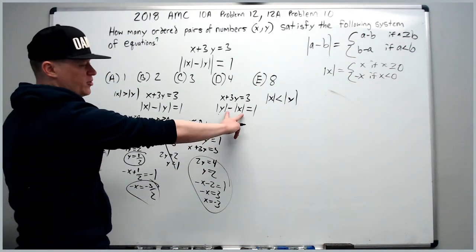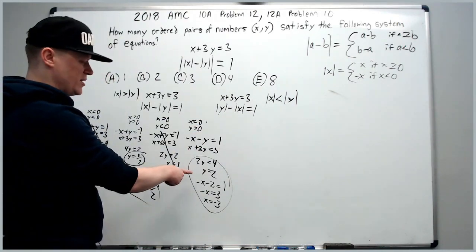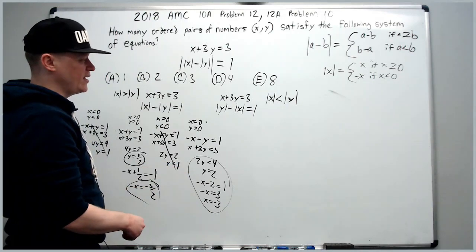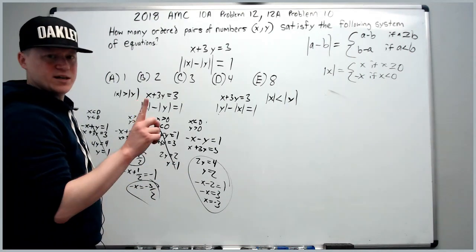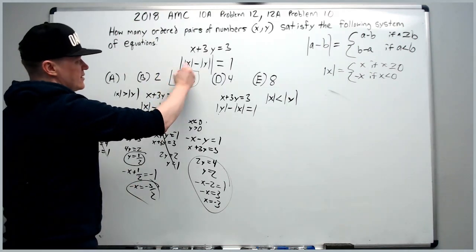I'm not going to go through all of these to save time in the video, but if you were to go through them, you would get one duplicate that you already had over here. You would also get one unique solution. So that's three solutions, the answer is C3.